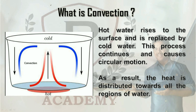Hot water rises to the surface and is replaced by cold water. This process continues and causes circular motion. As a result, the heat is distributed towards all the regions of the water. So this is convection — it only occurs in fluids and gases.